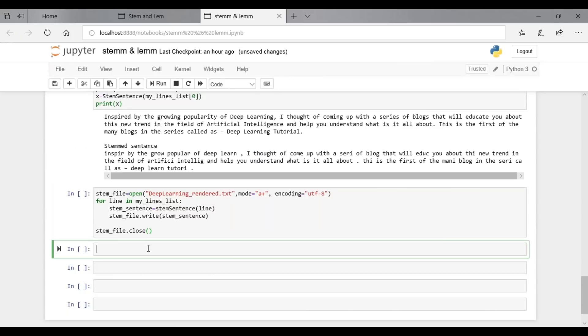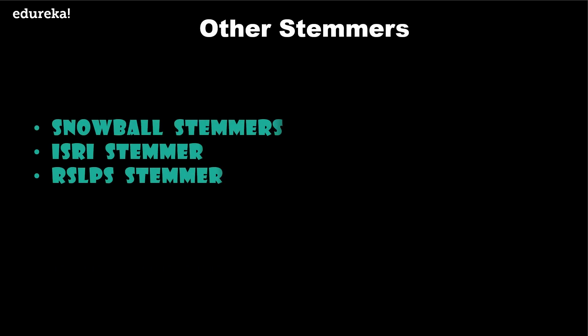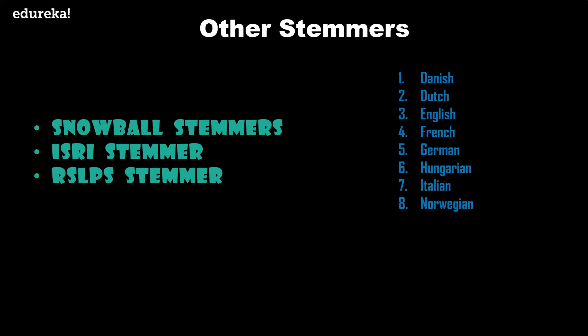Python NLTK provides not only two English stemmers — Porter stemmer and Lancaster stemmer — but also many non-English stemmers as part of Snowball stemmers, ISRI stemmer, and RSLPS stemmer. Python NLTK included Snowball stemmers as a language framework to create non-English stemmers. Currently it supports Danish, Dutch, English, French, German, and many more languages.